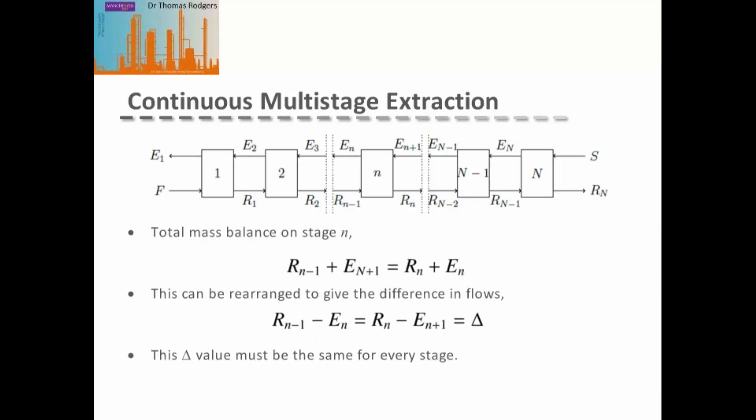As well as taking a total mass balance over the whole system, we can also look at a mass balance on a single stage. So for our stage N, we know that the raffinate arriving from the stage below plus the extract arriving from the stage above must be the same total mass as the raffinate and extract leaving stage N.